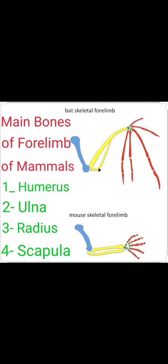Assalamu alaikum students, we are going to start a new chapter that is locomotion. In this chapter we will study about the main bones of the forelimb of mammals. A lot of mammals share the same pattern of forelimb bones, and the major bones of the forelimbs are humerus, ulna, radius, and scapula.